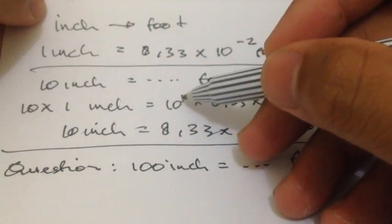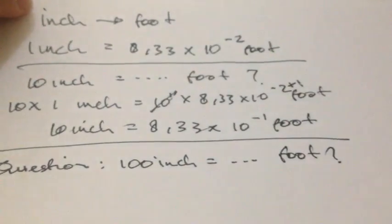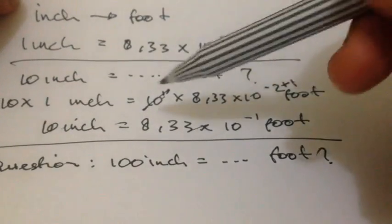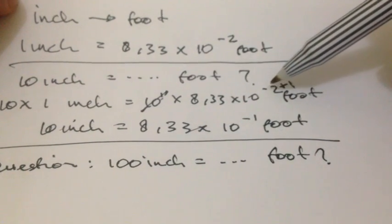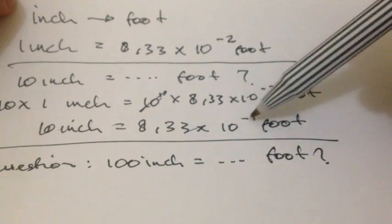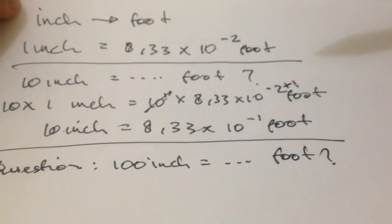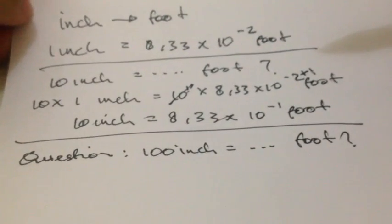Because you have the 1 over here, we just take that off because we don't use it again. Because of that, we'll have minus 2 plus 1 is equal to minus 1, and that's how we answer this question.